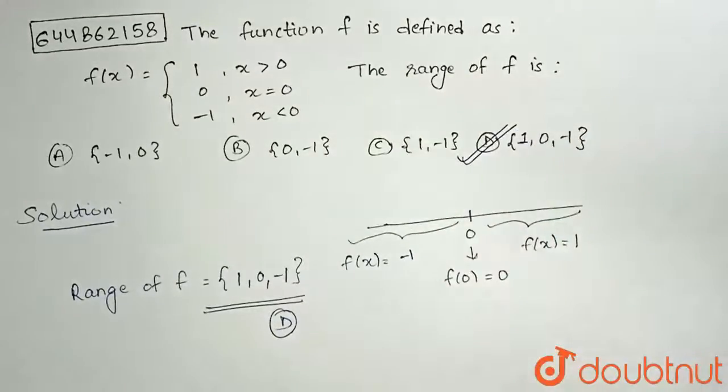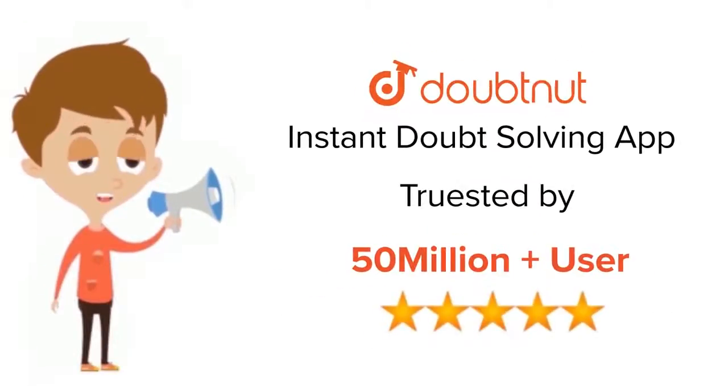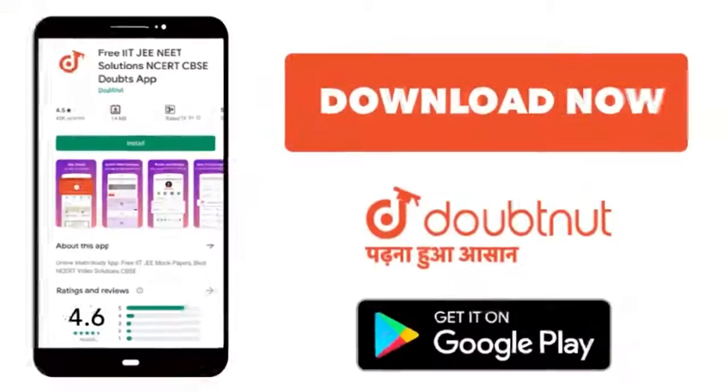So, option d is the correct answer. Thank you. For class 6 to 12, IIT and NEET level, trusted by more than 5 crore students. Download Doubtnet app today.